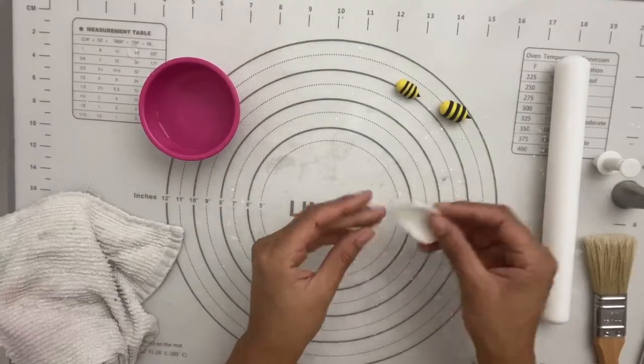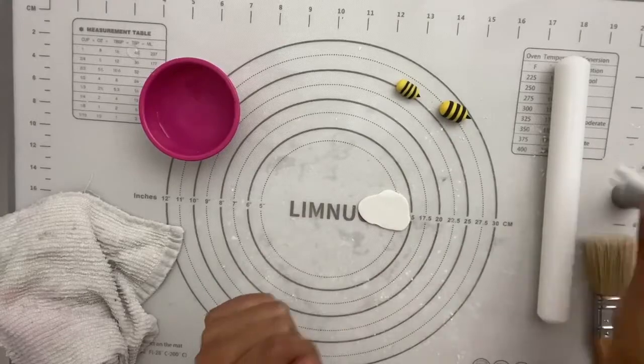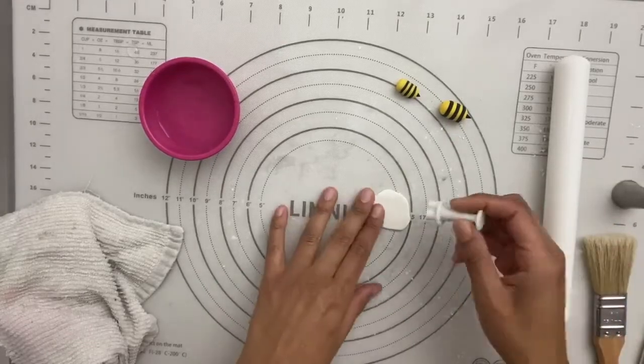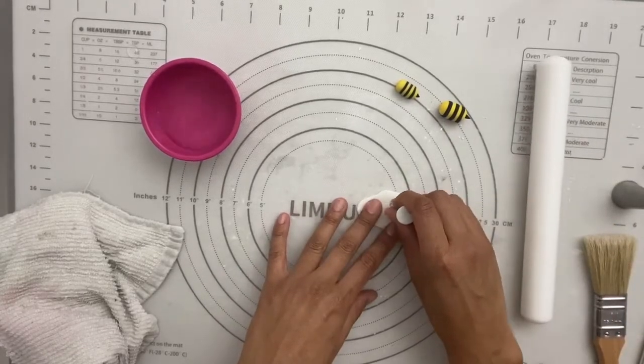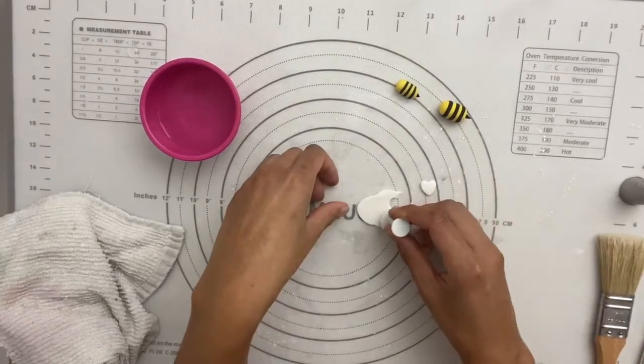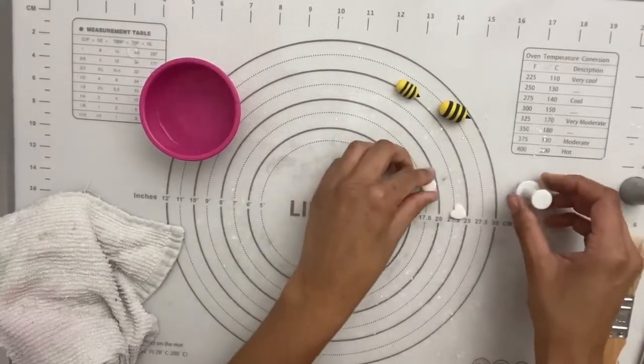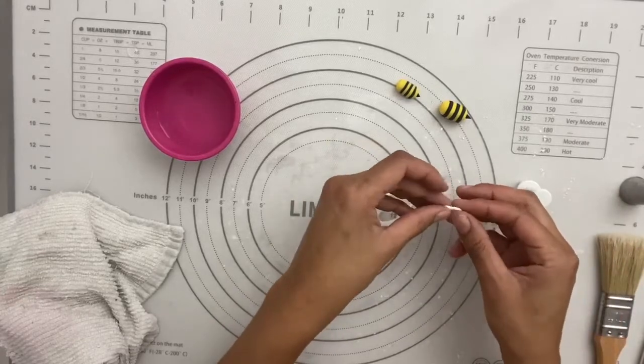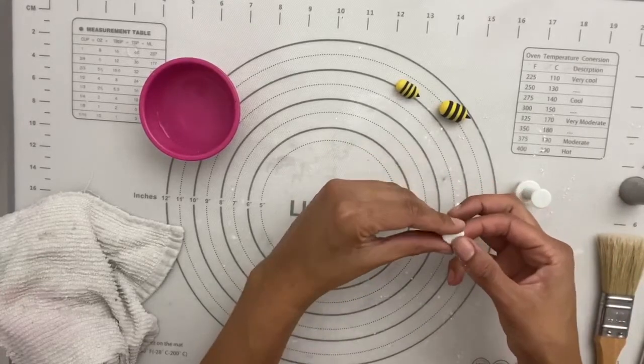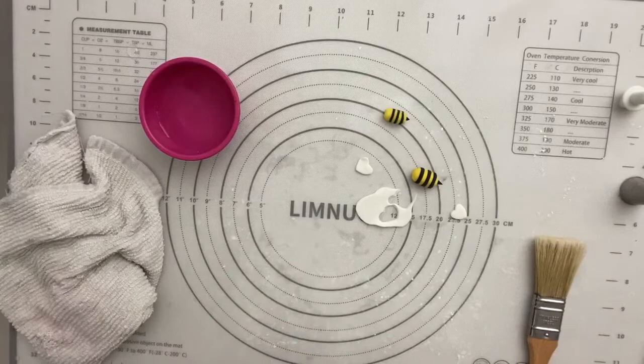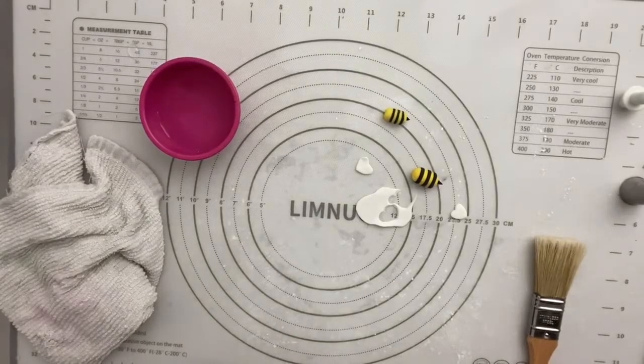So for the wings, I just rolled out a little bit of white fondant. And then I have this little heart cutter that came in a set. I'm just going to cut a couple of those out. Where did my paintbrush go? I lost my paintbrush. Oh, I found it.